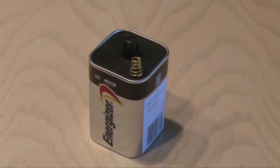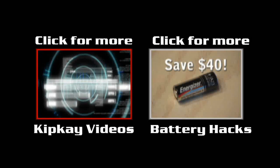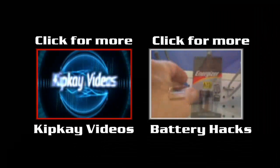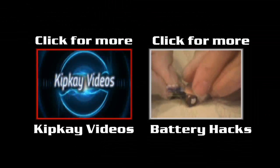So that's how to hack a 6-volt Lantern battery and get some F-cells. Hey, if you want to check out my other hacks, pranks, and how-to videos, click the box on the left. And click the box on the right for more battery hacks. Thanks for watching, we'll see you next time.